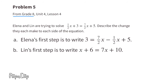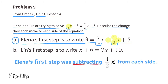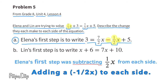Problem number 5, from 8th grade Unit 4 Lesson 4. Elena and Lynn are trying to solve this equation. A: Elena's first step is to write 3 equals 7 halves X minus 1 half X plus 5. There's a 1 half X missing from the left-hand side and a negative 1 half X added to the right side, so Elena's first step was subtracting 1 half X from each side.